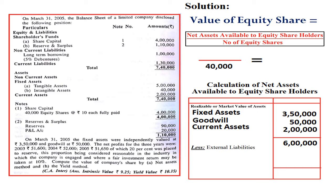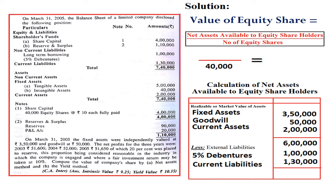From this, we deduct external liabilities. The external liabilities are 5% debentures — 1,00,000 — and current liabilities — 1,30,000. After deducting both, the resultant figure is 3,70,000, which is the net assets available to equity shareholders. Placing 3,70,000 as the numerator and dividing by 40,000, we get 9.25 as the intrinsic value of the share.